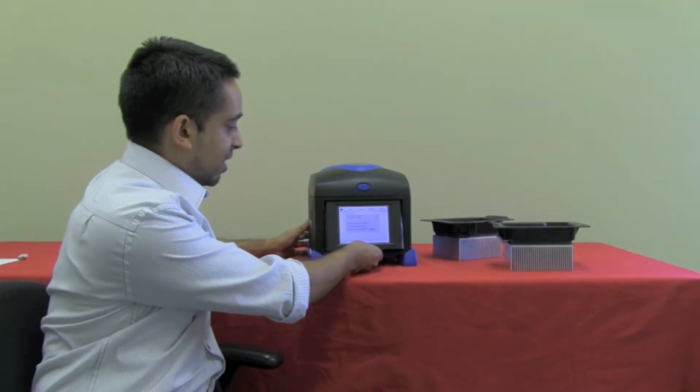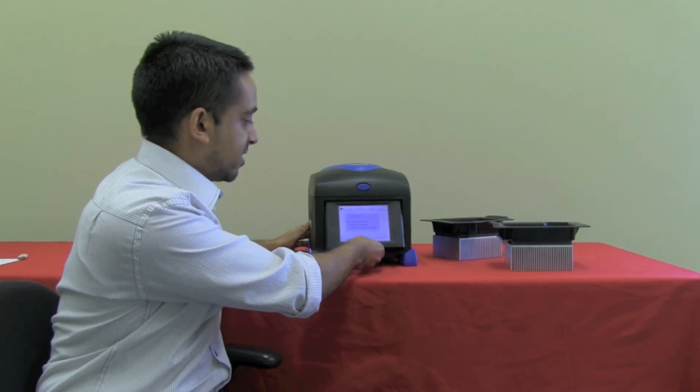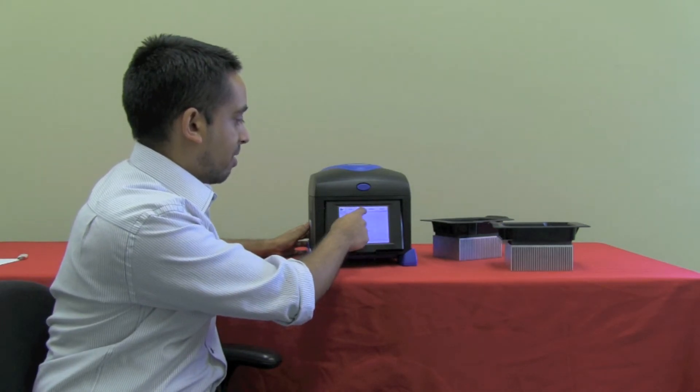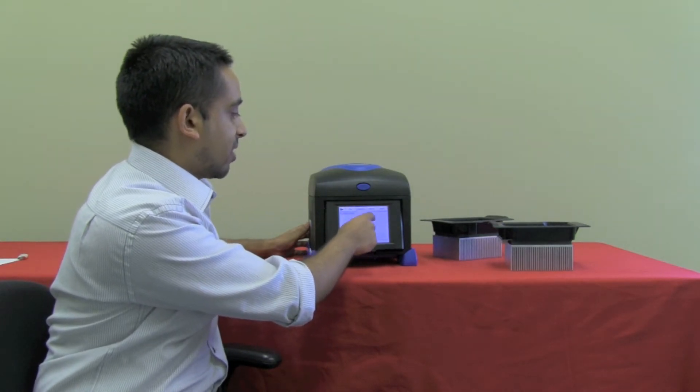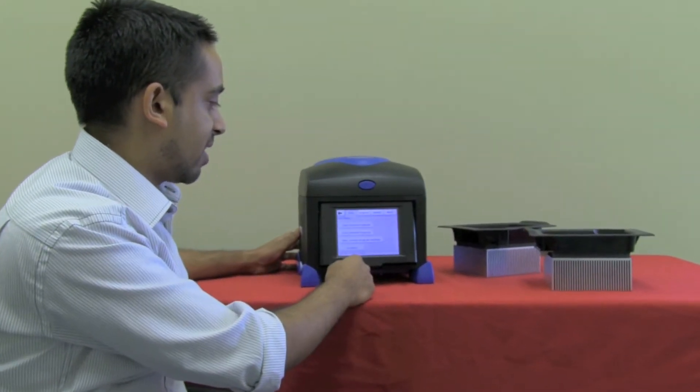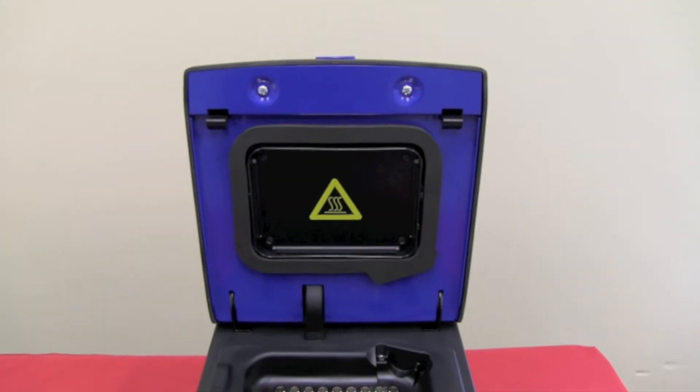If we take a look at some of the features, we can look at this touch screen display here. This is adjustable and from here we can take a look at all our parameters at any given time. We can look at our gradients, our temperatures, and we can also change parameters and program parameters here as well. Another unique feature of the Series 6 is its lid locking mechanism.